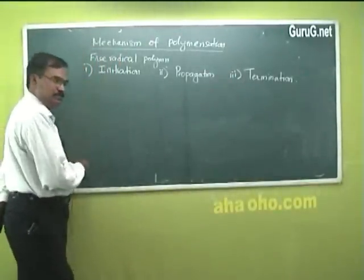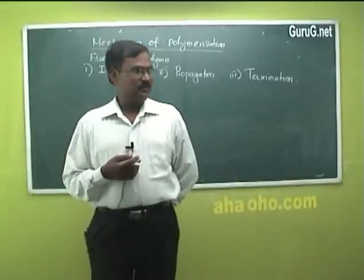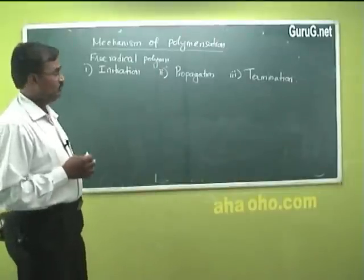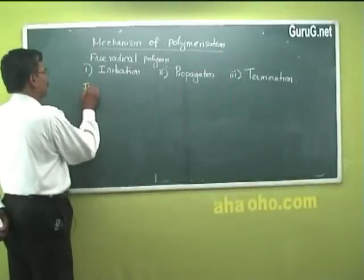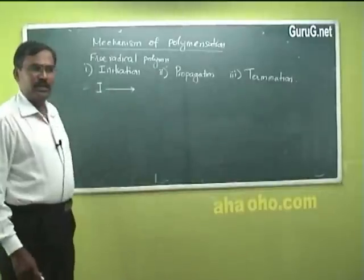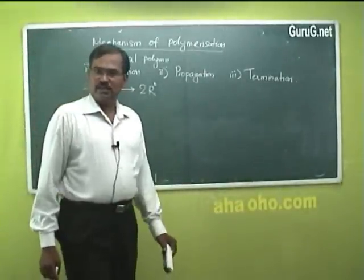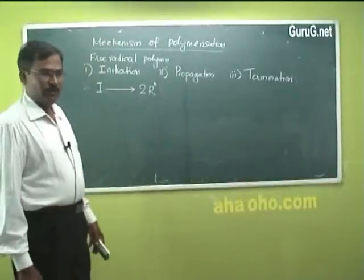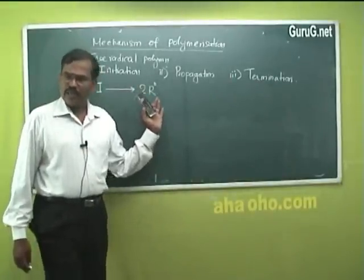Let us look at the initiation step. To initiate the polymerization reaction, we need certain substances — we can call them catalysts — and they are called initiators. In the first step of free radical polymerization, free radicals are generated using initiators. If I is the initiator, this initiator undergoes thermal decomposition via homolytic cleavage, giving two free radicals that will carry out the polymerization.